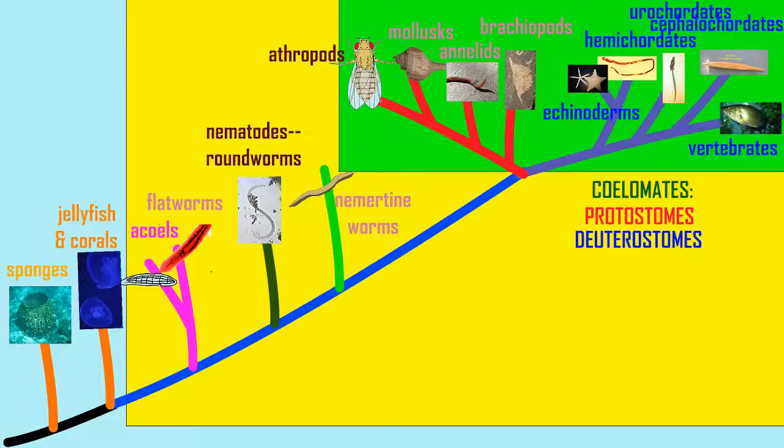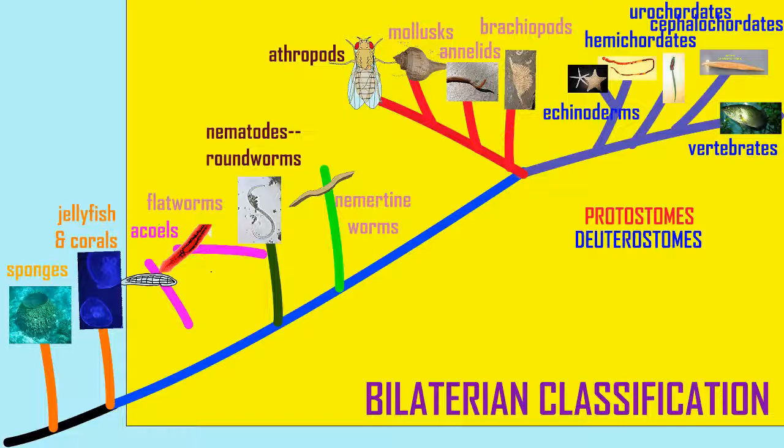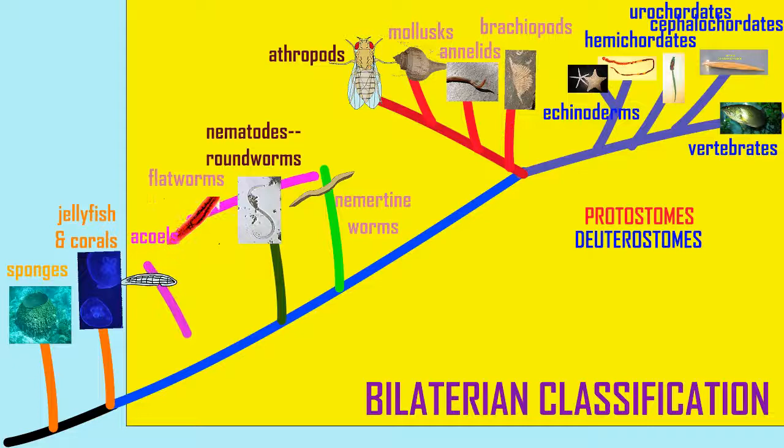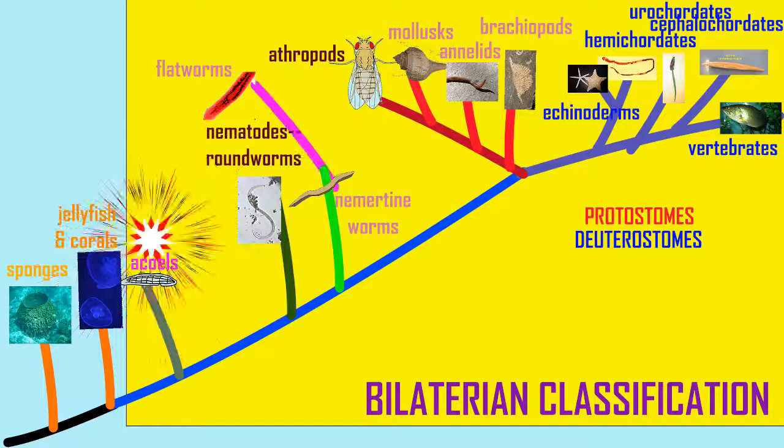As more and more genetic sequences became available for comparison, a new classification scheme gathered more and more support. In this classification schema, the flatworms were no longer considered a single group, and the acoel flatworms were considered the sister group of all other bilaterians — the most primitive group of bilaterians.